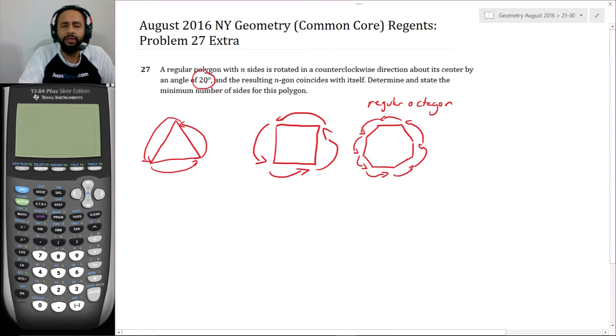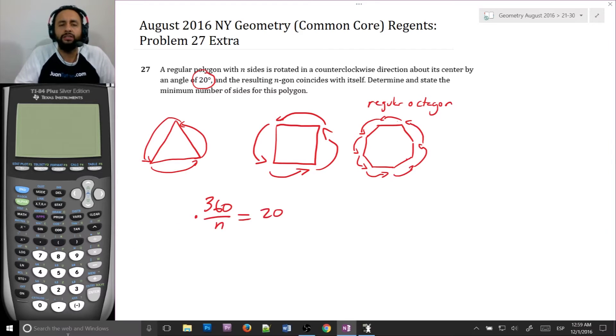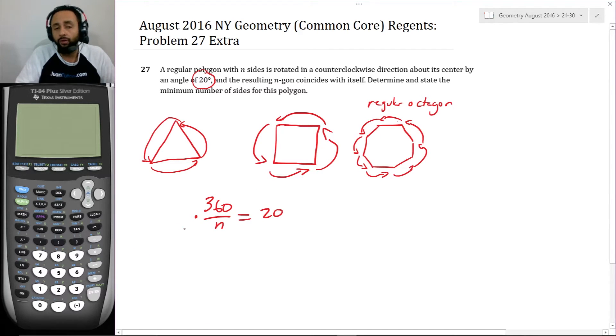then all we have to do is solve the equation that 360 divided by N is equal to 20. And hopefully N is an integer. If this is the case, if not, then we try 360 over 2N and then 360 over 3N, 360 over 4N, and until we get an integer.